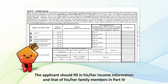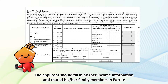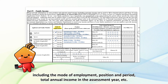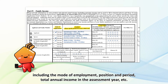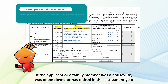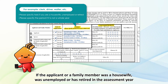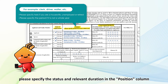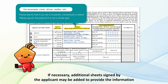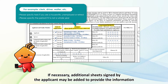The applicant should fill in his or her income information and that of his or her family members in Part 4, including the mode of employment, position and period, and total annual income in the assessment year. If the applicant or a family member was a housewife, was unemployed, or has retired in the assessment year, please specify the status and relevant duration in the position column. If necessary, additional sheets signed by the applicant may be added to provide the information.